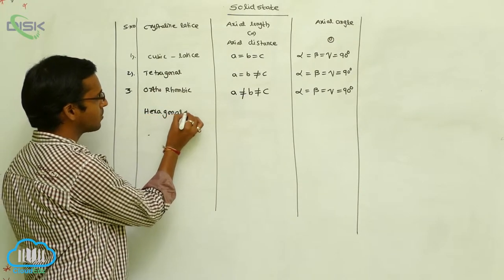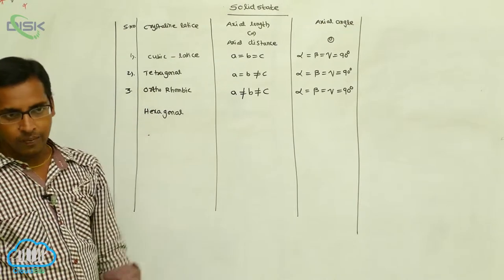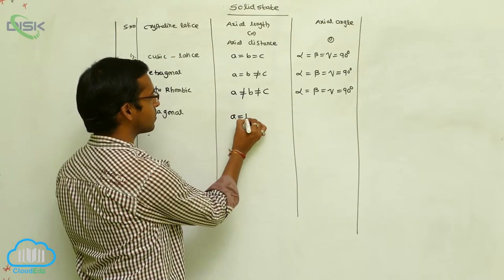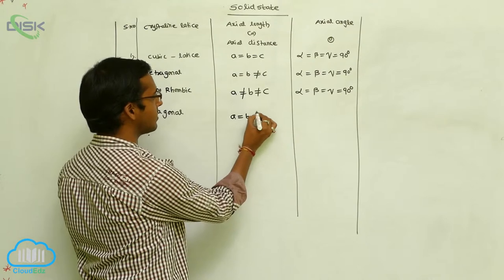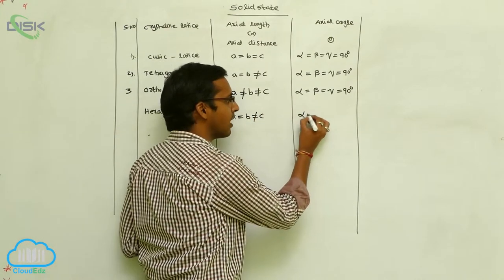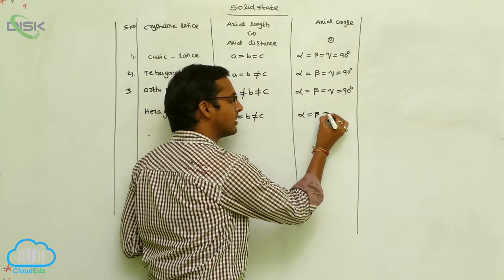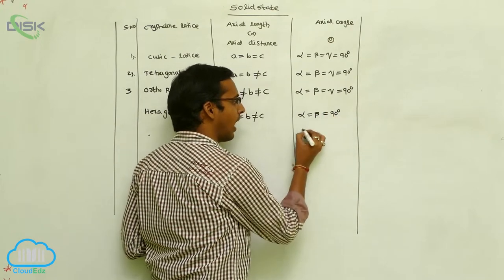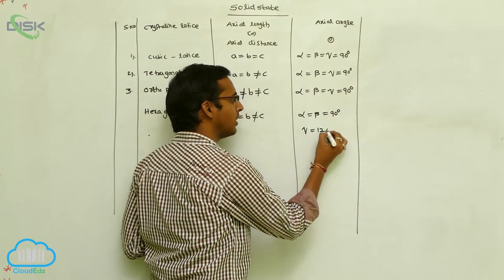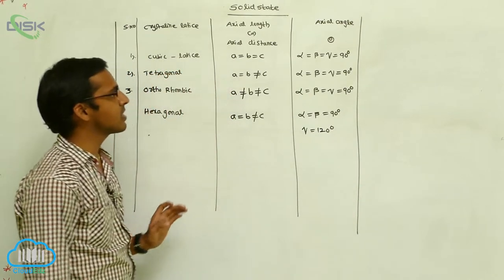In the hexagonal lattice, a equals b, but b is not equal to c. The angles here are: alpha equals beta equals 90 degrees, and gamma equals 120 degrees. These are the crystalline substances.